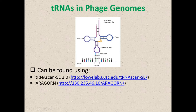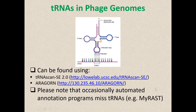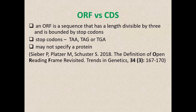tRNAs are usually drawn in the cloverleaf formation and can be found using two really good tools online: tRNA scan, one of the oldest programs on the internet, and Aragon. Note that if you're using automatic annotation — RAST being one of the tools — it doesn't always show you the tRNAs. You also want to make sure the tRNA is in fact complete. Some programs miss the terminal CAA residues, so ensure it is a complete phage tRNA.